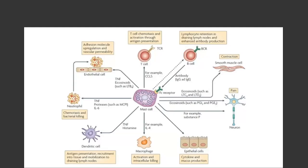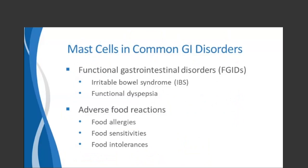Some very important functions can all be stimulated by mast cell activation. The classic activation scenario involves stimulation by binding to an antigen, especially food antigens. Common mast cell disorders can be thought of in two main categories: functional gastrointestinal disorders — primarily IBS and functional dyspepsia — and adverse food reactions, particularly food allergies, food sensitivities, and some types of food intolerances, all of which can promote symptoms through mast cell involvement.